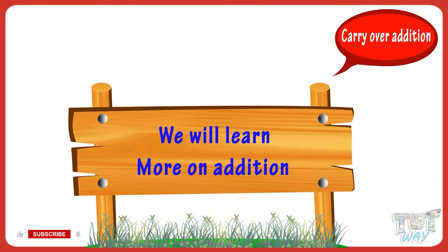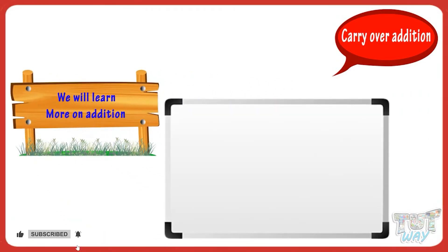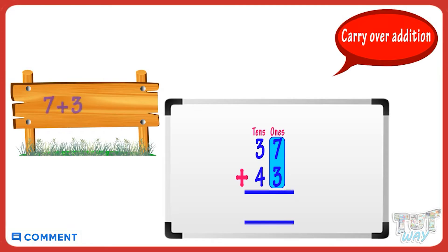First of all, we add the digits in the ones place. So add 7 and 3. Adding 7 and 3 we get 10. Now, 10 is a two-digit number, so how do we write 10? Write the digit in ones place, that is 0, below the ones place digits in sum.